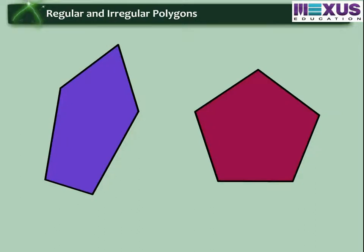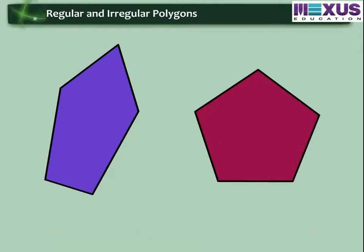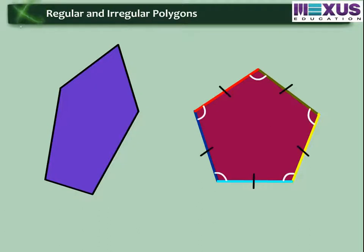Now compare these two polygons. Can you find any difference between them? Yes. The length of the sides and angles are different in the first polygon, while in the second, they are equal.